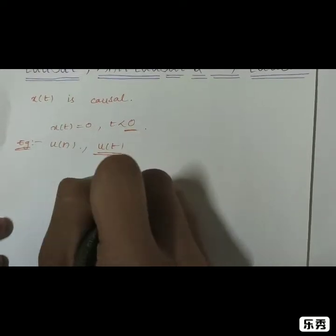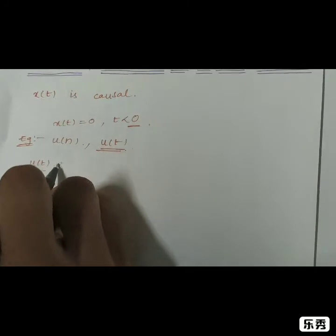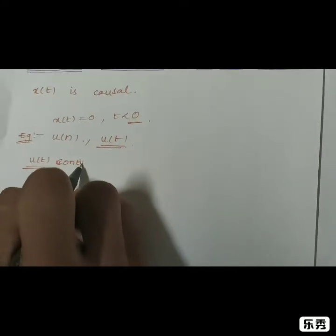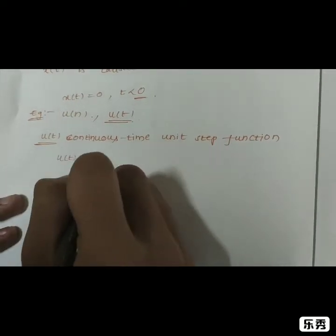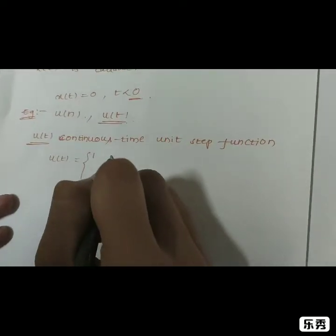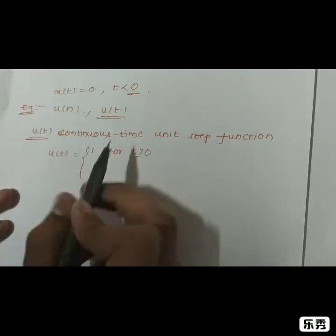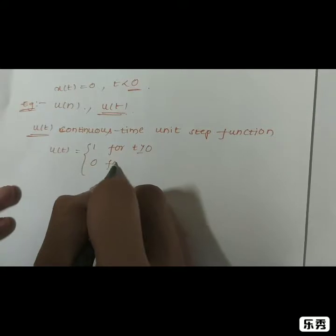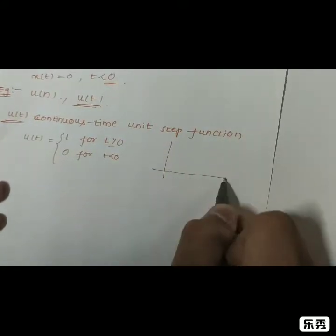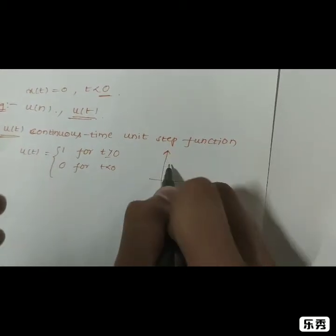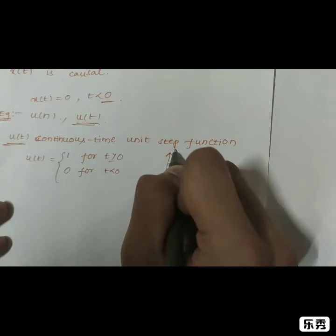For the continuous-time unit step function u(t), the signal exists only for positive values of t. It equals 1 for t greater than or equal to 0, and 0 for t less than 0. The graph comes out to be like this.